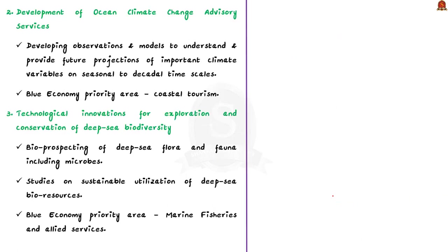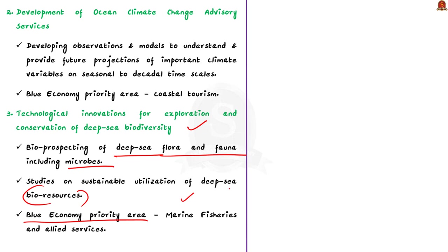The second component is the development of ocean climate change advisory services. Under this, observations and models will be developed to understand and provide future projections of important climate variables on seasonal to decadal time scales. This component will support the blue economy priority area of coastal tourism. The third component is technological interventions for exploration and conservation of deep sea biodiversity, including bioprospecting of deep sea flora and fauna including microbes. Bioprospecting means the search for plant and animal species from which medicinal drugs, biochemicals and other commercially valuable materials can be obtained. Studies on sustainable utilization of deep sea bioresources will be the main focus of this component, supporting the blue economy priority area of marine fisheries and allied services.